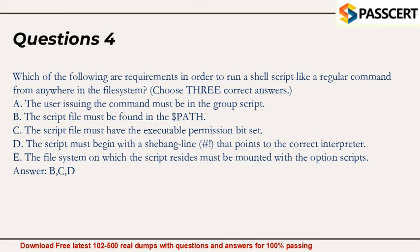Question 4. Which of the following are requirements in order to run a shell script like a regular command from anywhere in the file system? Choose three correct answers. A. The user issuing the command must be in the group 'script'. B. The script file must be found in the $PATH. C. The script file must have the executable permission bit set. D. The script must begin with a shebang line (#!) that points to the correct interpreter. E. The file system on which the script resides must be mounted with the option 'scripts'. Answer: B, C, D.